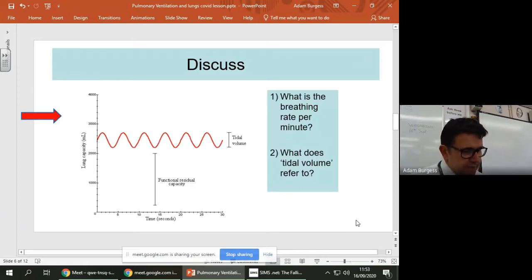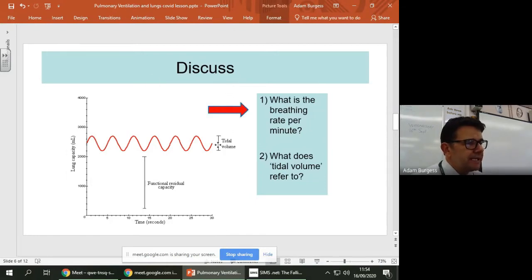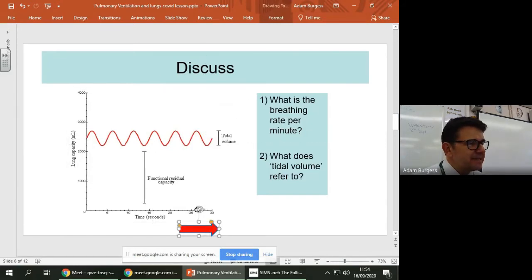Right, so question one asks, what is the breathing rate per minute? Well, what you've got to do is count how many breaths there are in a minute. Well, obviously, here there's only 30 seconds, so you're going to have to double whatever you count.